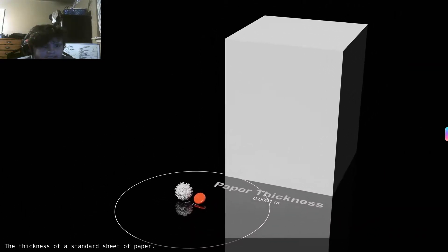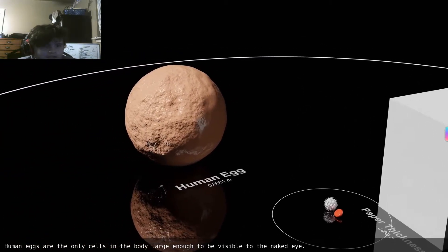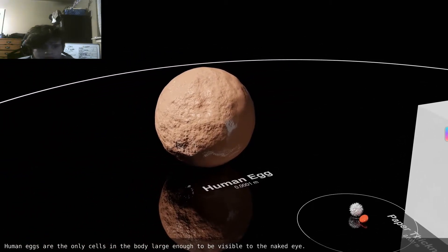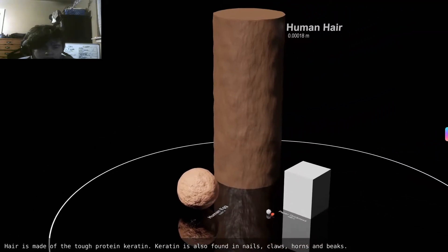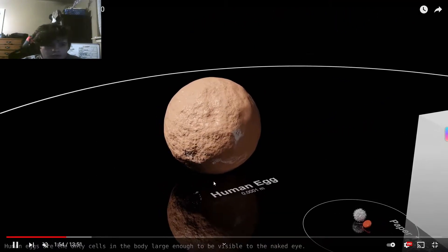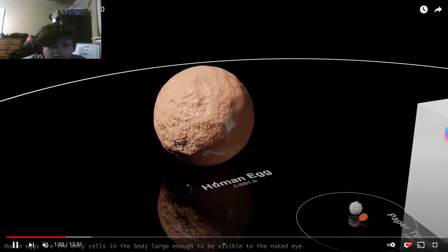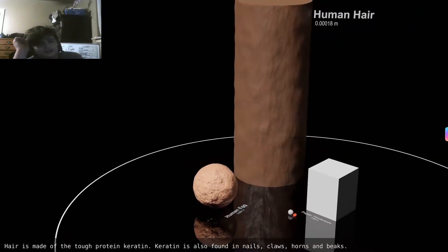Paper thickness, human egg. Wait, what is it? Human eggs are the only cells in the body large enough to be visible by the naked eye.